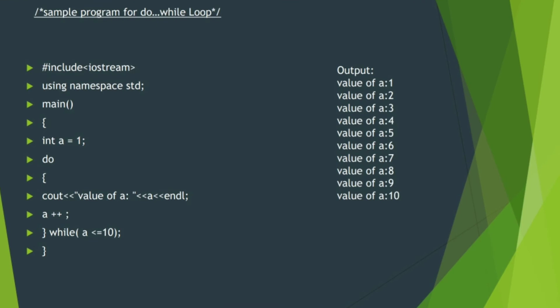Sample program for do-while loop. The initial value a is equal to 1. The 'do' keyword is used. After cout, the value of a will be printed. A++ will increase the value of a. Then we check the while condition: a is less than or equal to 10. If we check the output, we will print the value of a.